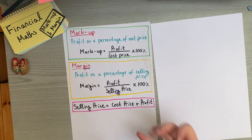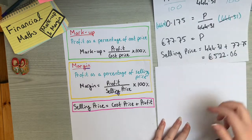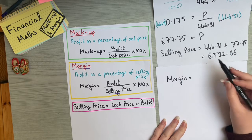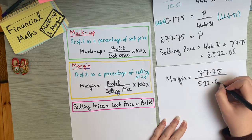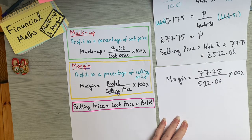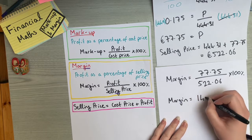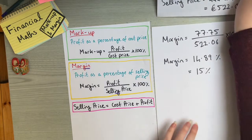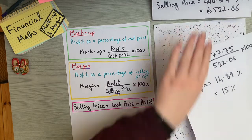To calculate the margin we now have both the profit and the selling price, so we just fill them into the margin formula. Margin = (profit / selling price) × 100 = (77.75 / 522.06) × 100. Putting that into the calculator gives a margin of 14.89%, which is approximately 15%. That's how straightforward it is when you already have the profit and selling price.